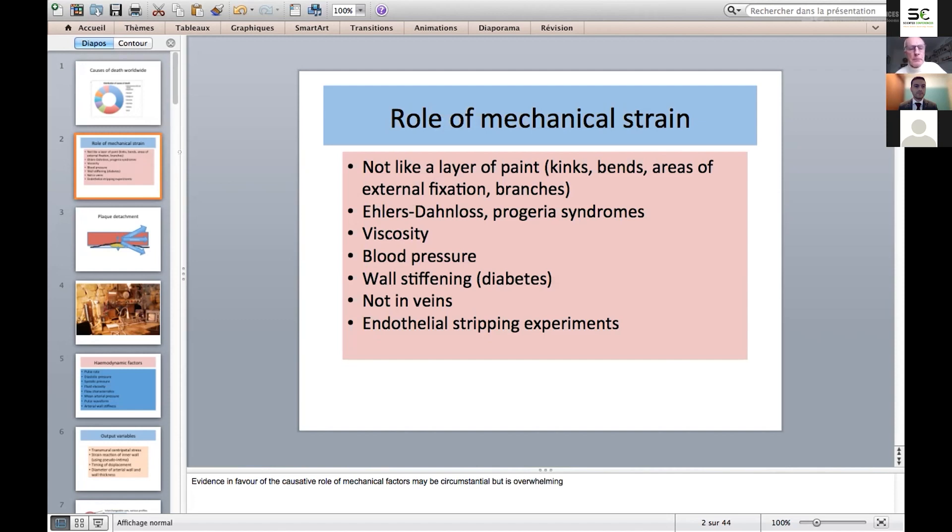We also see it prematurely in cases where the arterial wall is mechanically stiffened, such as in the progeria syndromes, Huntington-Gilford and Werner syndrome, and in situations where the stiffness is a result of diabetes. This suggests that arterial wall stiffness has an effect mechanically on the strain across the artery, determining atherosclerosis.